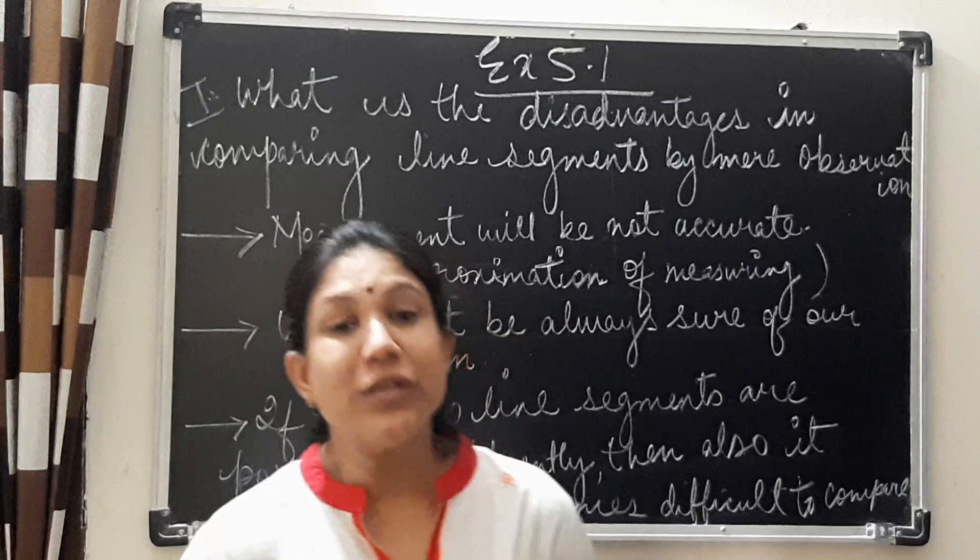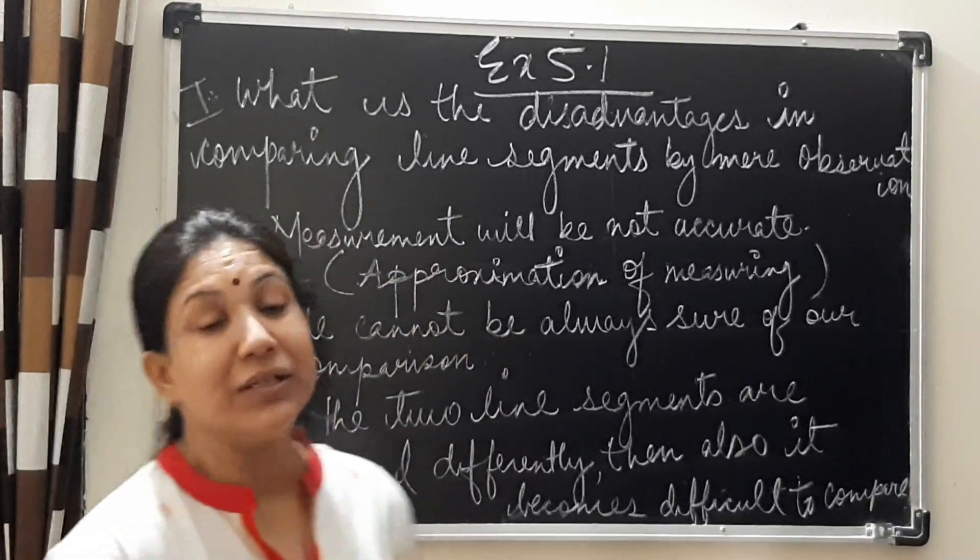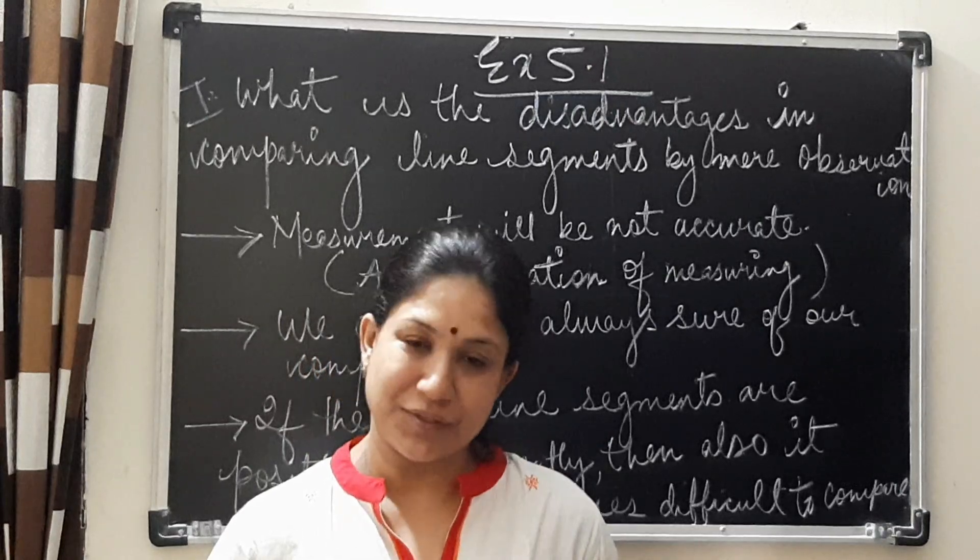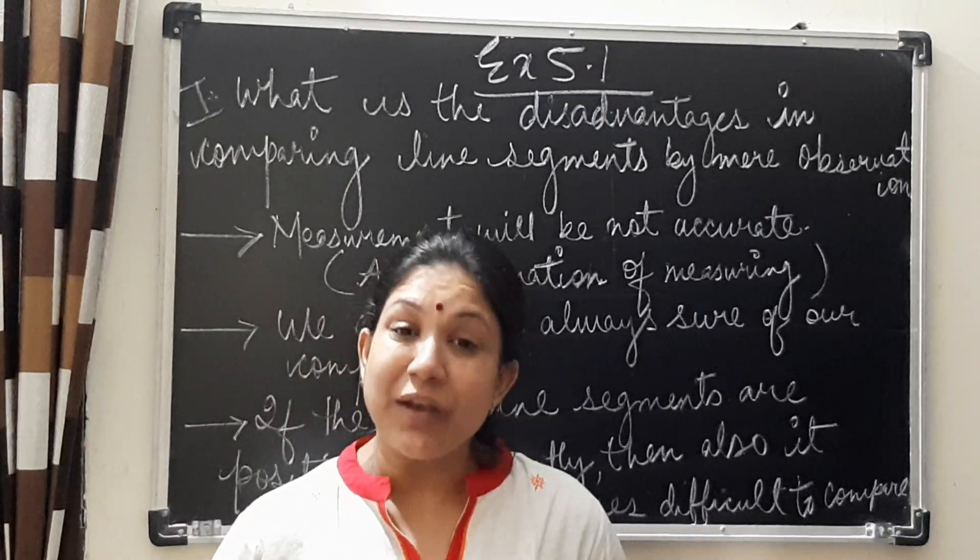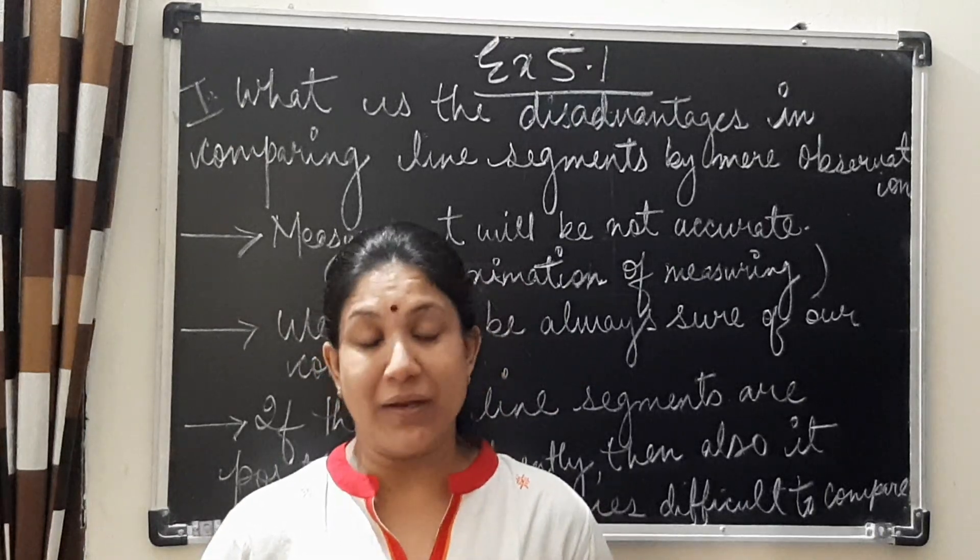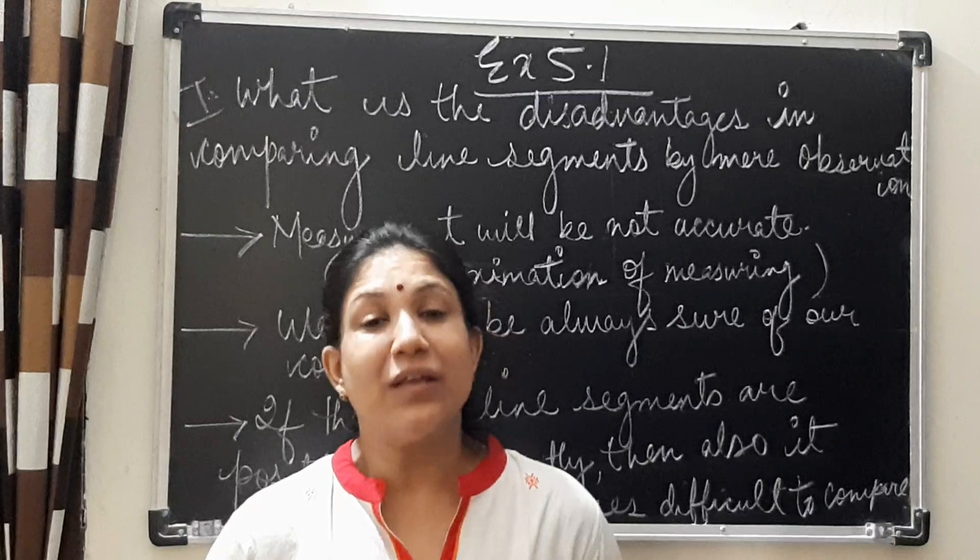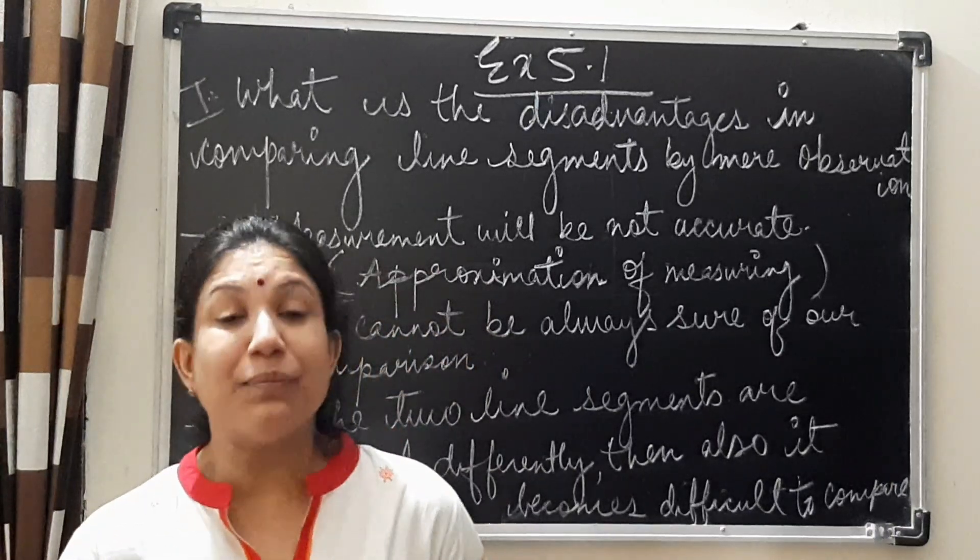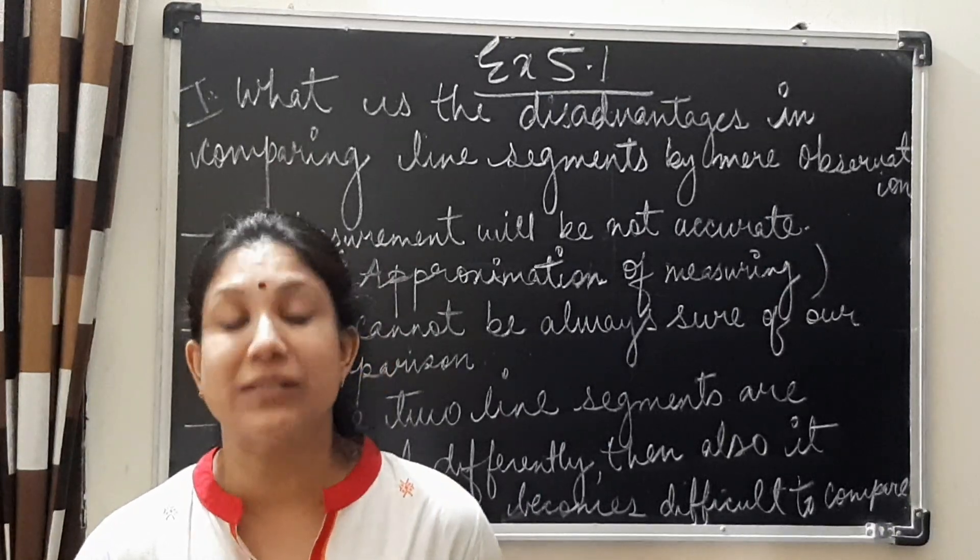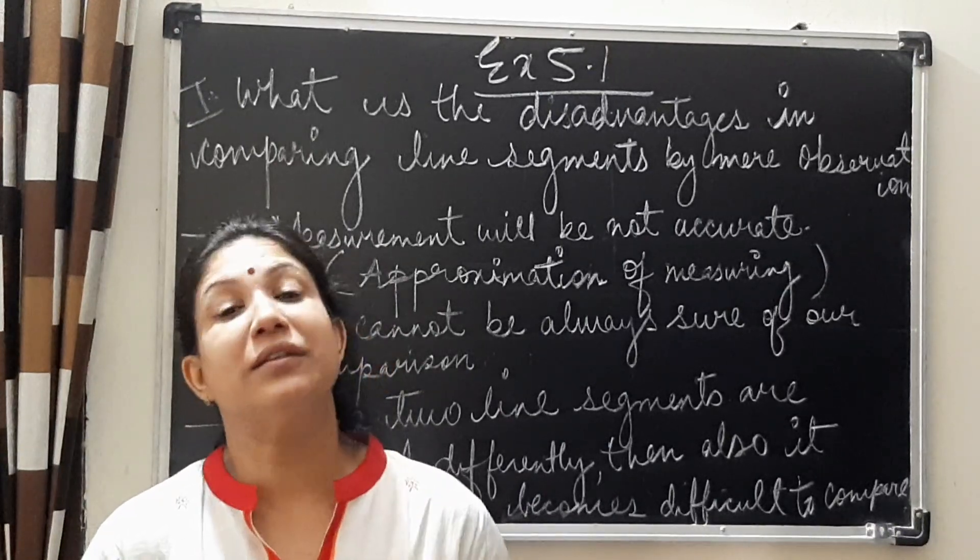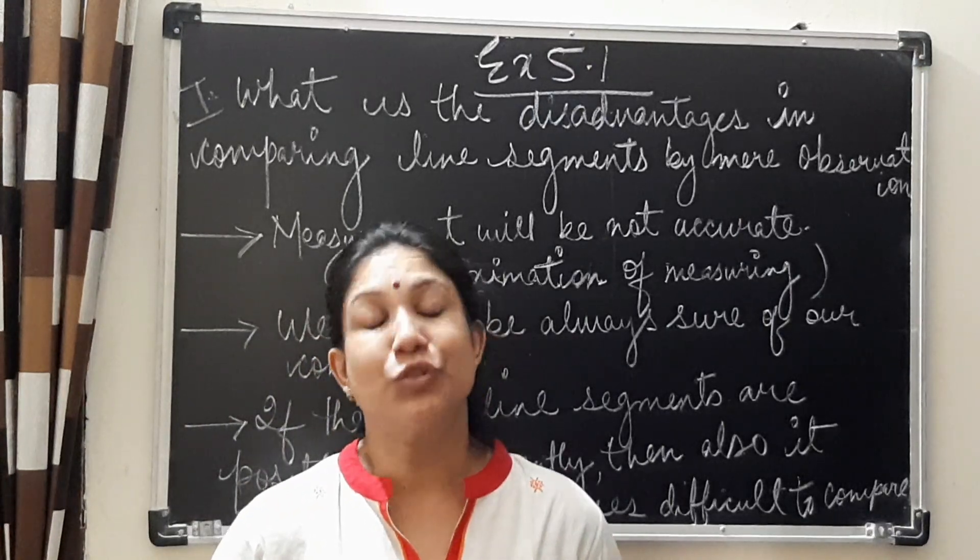The first question is what are the disadvantages in comparing line segments by mere observation? In the last session, I explained that you can compare any two line segments by various methods. The first method was just by observation. That is, just by looking at the two line segments, you see and decide which line segment is longer or shorter.